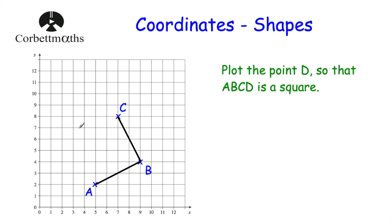There are a couple of approaches you could use. One approach is to consider the length of each side. To get from A to B, I go 4 across and 2 up. To get from B to C, I go 4 up and 2 across. So to get from C to D, I'm going to go 4 across and 2 down. So this point here would be the point D, because to get from each one of the points you're going 4 and 2. Let's join them up — and as you can see, we've now got our square. All four sides have got the same length and A, B, C, D is a square.